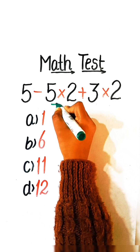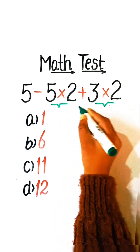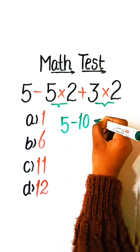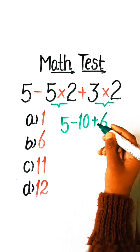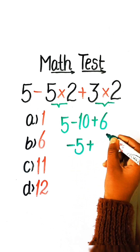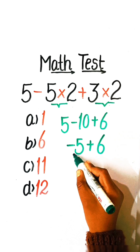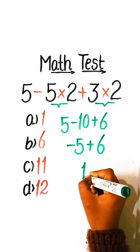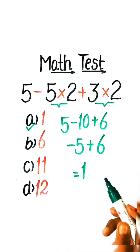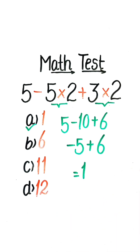We have to solve the multiplication part first, so we will write 5 minus 10 plus 6. 5 minus 10 is minus 5, plus 6. Minus 5 plus 6 equals 1. So Option A: 1 will be the correct answer. If you like my videos, please like, share, and subscribe.